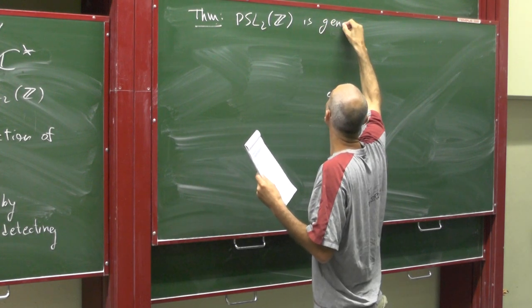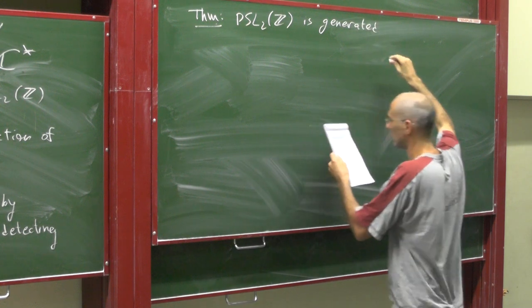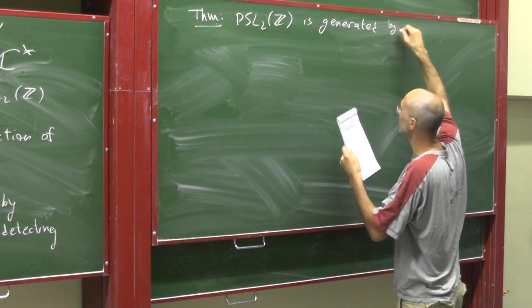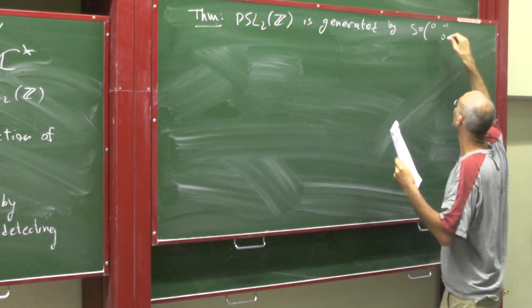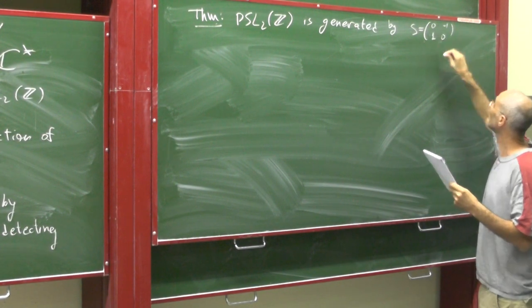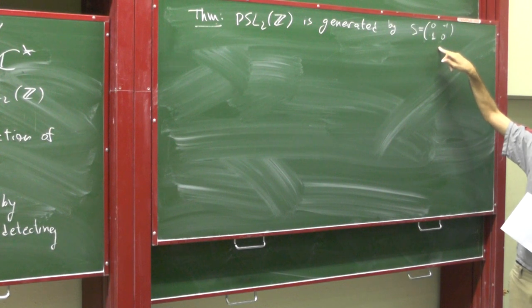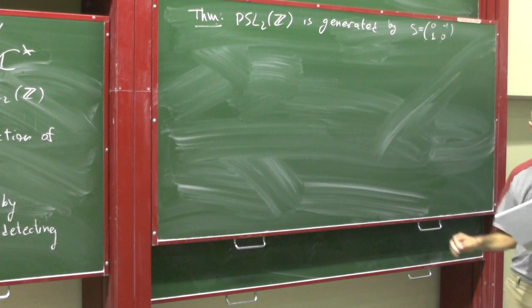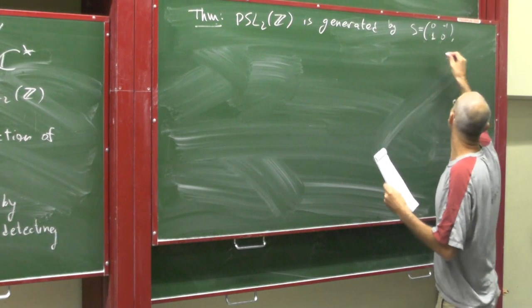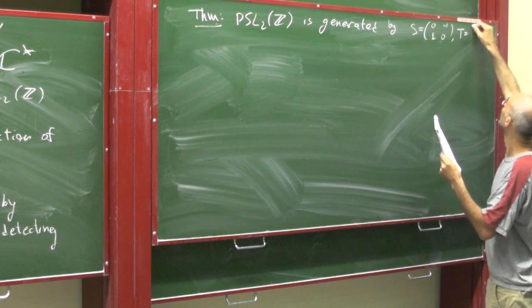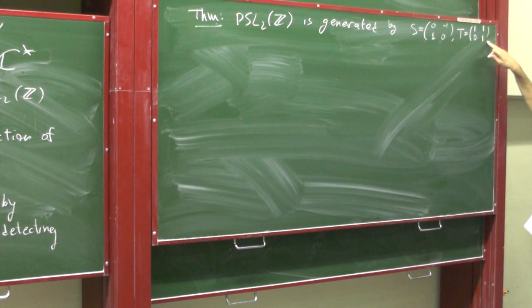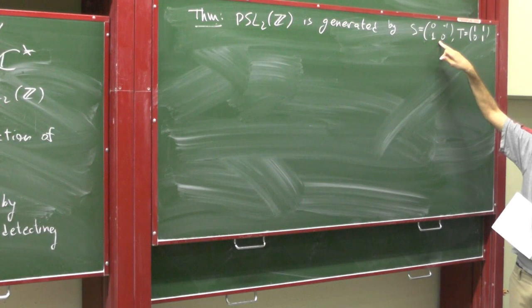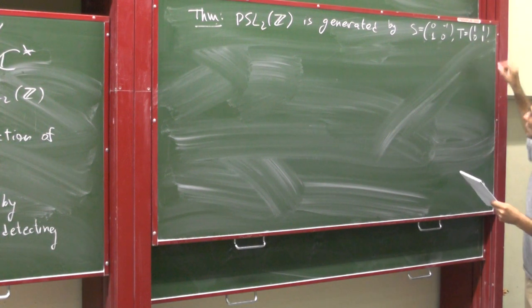It's generated by the elements S and T. Please bear in mind that my notation here, I'm using matrix notation but I'm actually meaning modulo negative 1. S is the matrix and T is the unipotent matrix 1, 1, 0, 1. This is called the translator sometimes. And these guys do generate PSL2Z. Let me give you the proof.